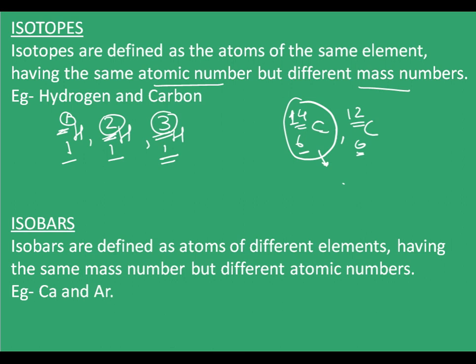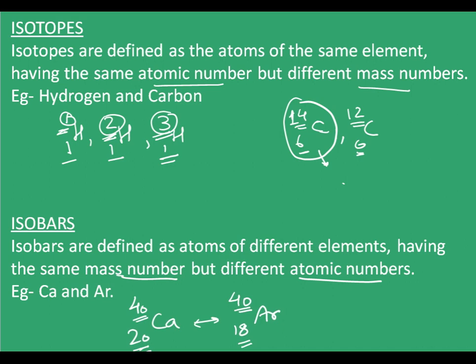Isobars are defined as atoms of different elements having the same mass number but different atomic numbers. For example, calcium is ⁴⁰Ca₂₀ while argon is ⁴⁰Ar₁₈. Both have mass number equal to 40, but they have different atomic numbers — calcium is 20 and argon is 18 — hence these are isobars. With this, we end this chapter on structure of atoms. In the next video, we will start with the new chapter. Thank you.